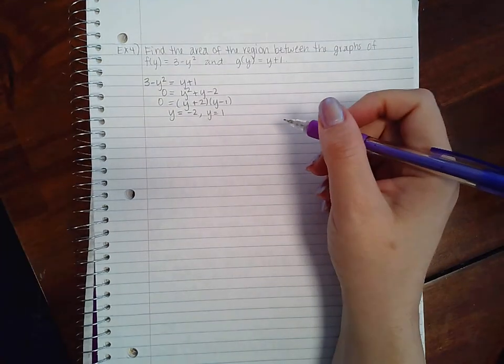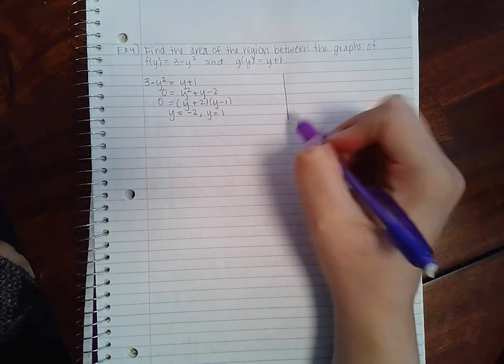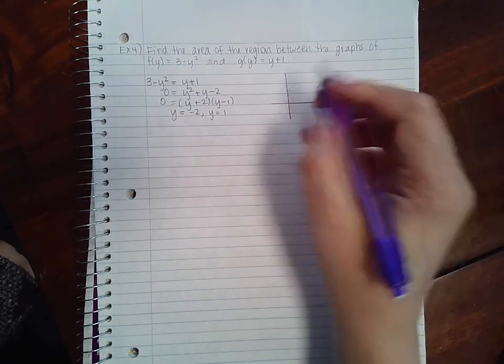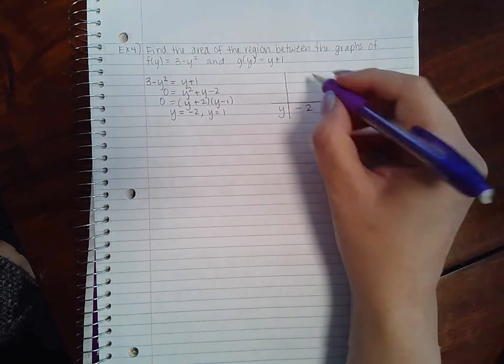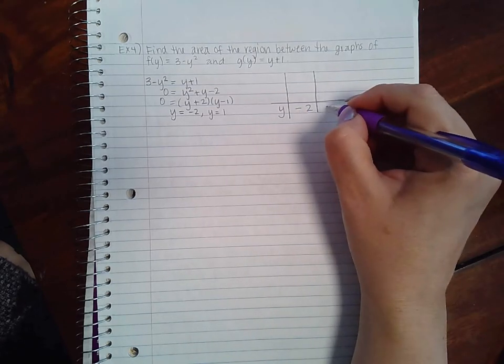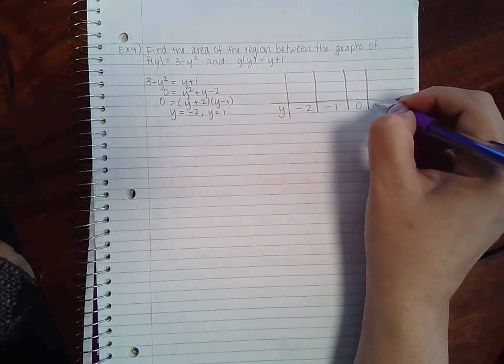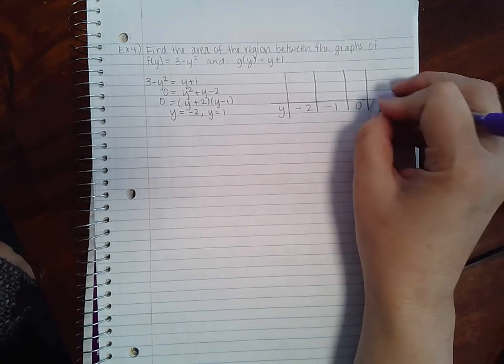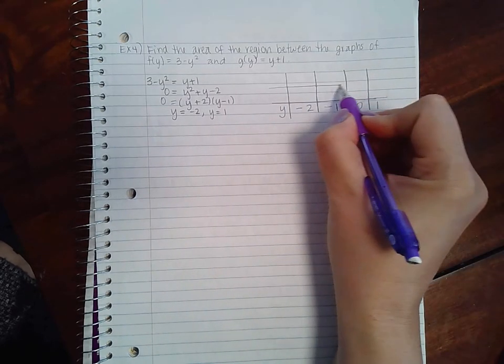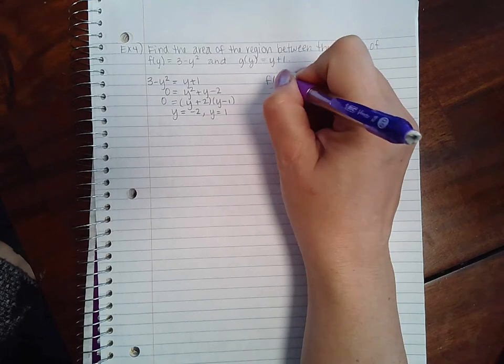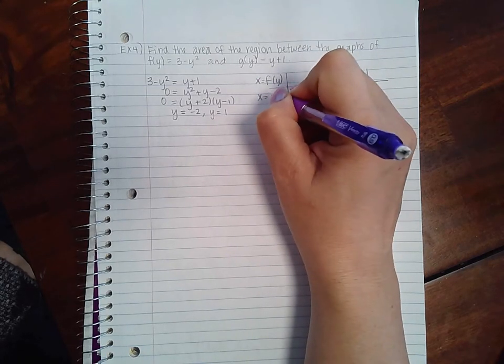Now for this one it's a little bit more complicated, so I'm going to set up a chart just to help me. I have the y values -2 to 1, so I'm going to actually use some of the y values in between like -1 and 0 and then positive 1. I have two functions to talk about: f(y) which is an x value and g(y) which is also an x value.